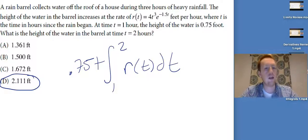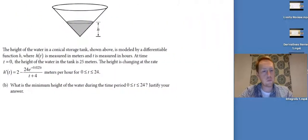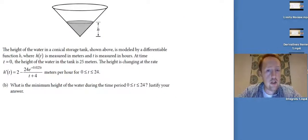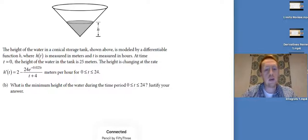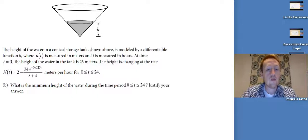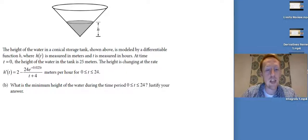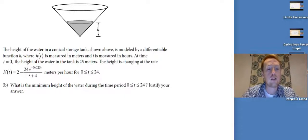Easy as that — find the integral, plug in your calculator, have the initial condition. This next question is a little harder. It mixes derivatives, the idea of extrema, and integrals all into one thing. First I'm going to show you how to write a function that actually gives you the height of the water at time T, and then you'll be able to use that.